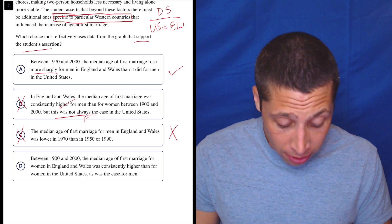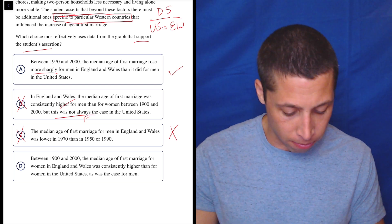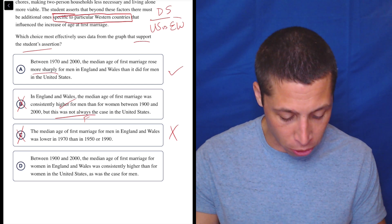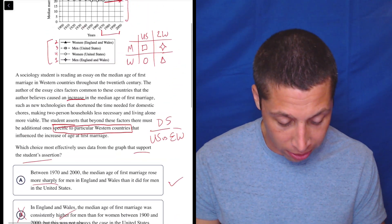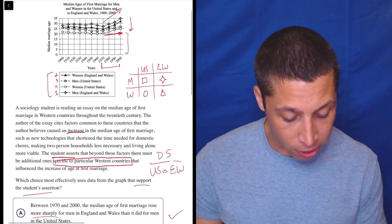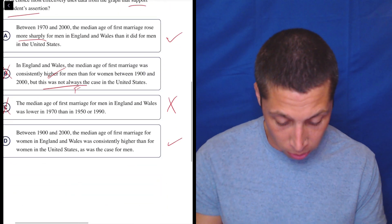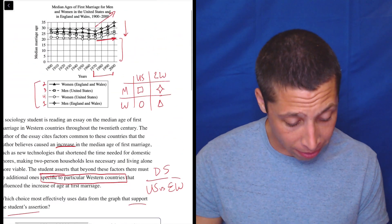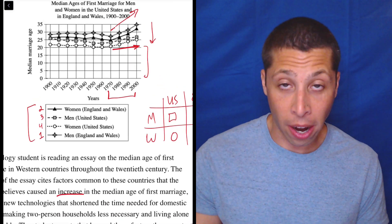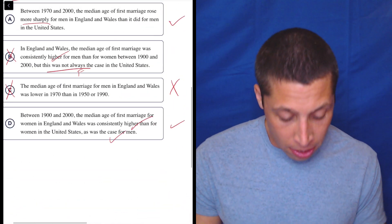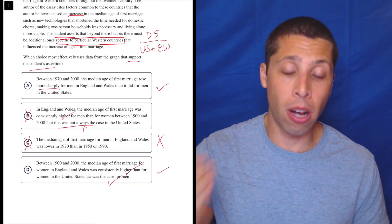D. Between 1900 and 2000, the median age of first marriage for women in England and Wales was consistently higher than for women in the United States. So let's just check that. That seems to be a contrast between the two countries. So that seems good in that sense. So it was higher for England and for women in England versus the US. So let's do that. Women in England is the triangle. Triangle higher than the circle. Yeah, seems true. Okay. Seems true. So check. As was the case for men. So same thing. Now we've got diamond higher than square. Diamond seems higher than square all the time. That's also true. Okay. So this happens.